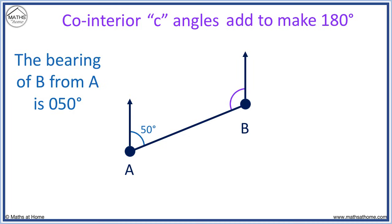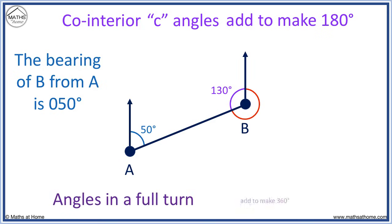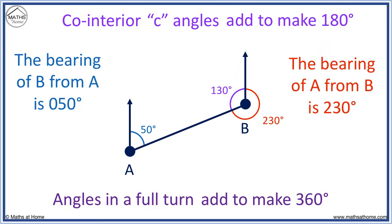Co-interior C angles add to make 180 degrees. We can see that 50 degrees and this angle make a C shape — they add to 180 degrees, so this angle is 130 degrees. However, this is not the bearing; the bearing is always measured clockwise from north. Angles in a full turn add to 360 degrees, so we subtract 130 degrees from 360 degrees to get 230 degrees. The bearing of A from B is 230 degrees.